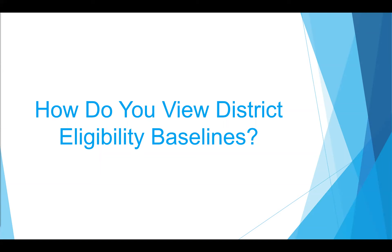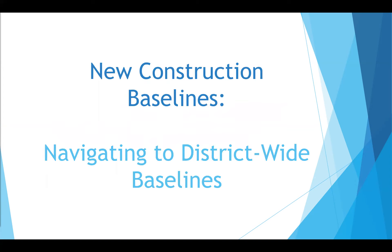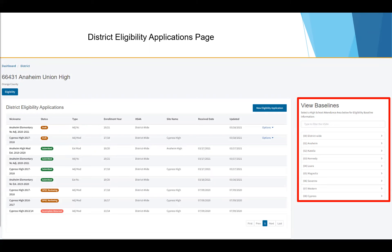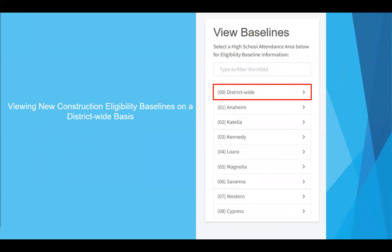We recommend you always check your eligibility baseline before applying for funding — this is like checking your bank account before writing a check. So how do you view your district's eligibility baseline? We'll first go over the steps of navigating to a district-wide new construction baseline. The eligibility application screen allows users to access the district's new construction and modernization baselines under the view baselines menu. To view your district's new construction baseline on a district-wide basis, click on district-wide under view baselines.